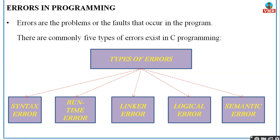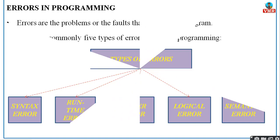So how many types of errors are there? There are five types of errors: syntax error, runtime error, linker error, logical error, and semantic error. We will see each one in detail with an example.